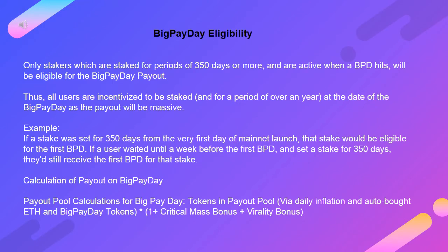Big Payday eligibility: Only stakers which are staked for periods of 350 days or more, and are active when a BPD hits, will be eligible for the Big Payday payout. Thus all users are incentivized to be staked for a period of over a year at the date of their Big Payday, as the payout will be massive. Example: if a stake was set for 350 days from the very first day of mainnet launch, that stake would be eligible for the first BPD. If a user waited until a week before the first BPD and set a stake for 350 days, they'd still receive the first BPD for that stake. Calculation: payout pool = tokens via daily inflation + auto-bought ETH + Big Payday tokens × (1 + critical mass bonus + virality bonus).